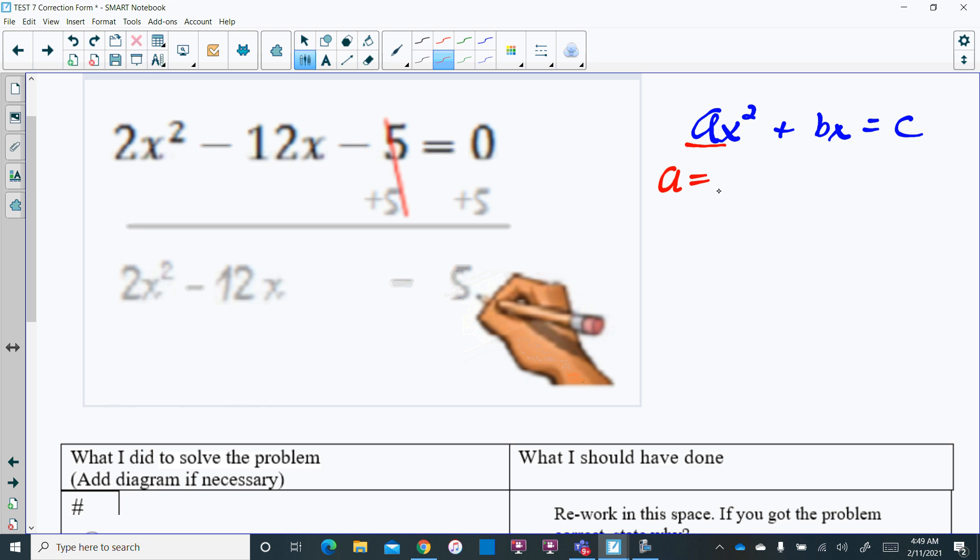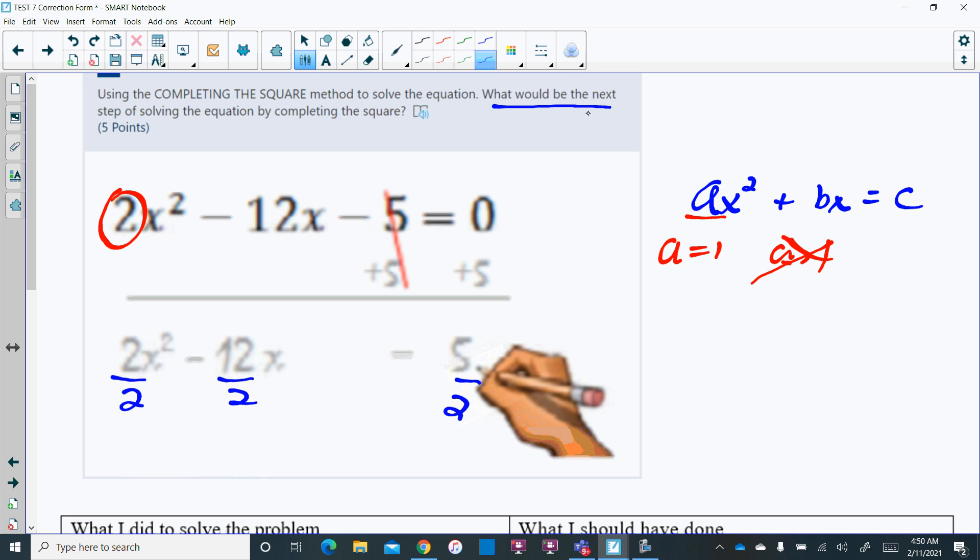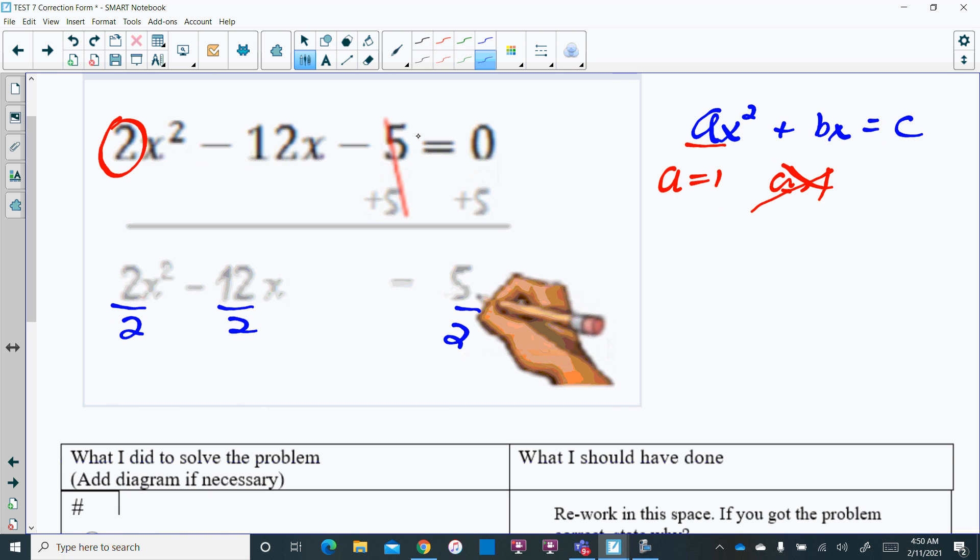Your a here has to equal 1. We cannot have an a greater than 1. That cannot happen. So right here, because we have this a greater than 1, we have to divide everything by 2. They were asking what would be the next step. The next step was to divide both sides of the equation by 2.